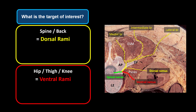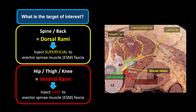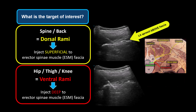Just as with the thoracic ESP block, our most up-to-date understanding indicates that the dorsal and ventral rami should be regarded as two distinct clinical targets in the lumbar ESP block. If analgesia of the spine and lower back is desired, the dorsal rami are the primary target. If analgesia of the hip and proximal lower limb is desired, the ventral rami are the target, and we can regard the ESP block as a lumbar plexus block by proxy. Follow the links in the description for more details on how to perform these two variants of the lumbar ESP block.